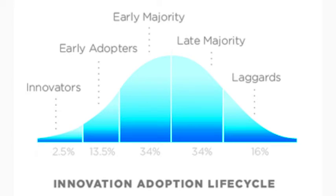Early majority. As a product begins to have mass market appeal, the next class of adopter to arrive is the early majority. This class of adopter is reasonably risk-averse and wants to be sure that their often more limited resources are spent wisely on products. Late majority. The late majority is rather more skeptical, with less money, lower social status, and less interaction with thought leaders.